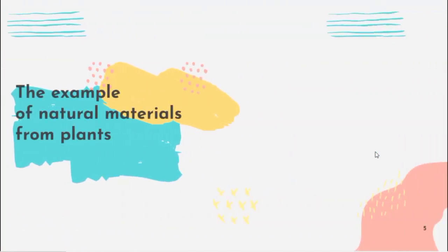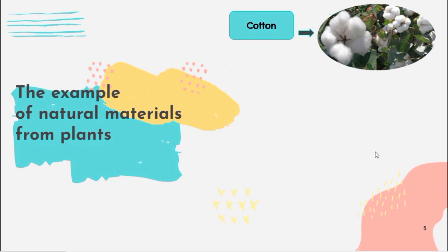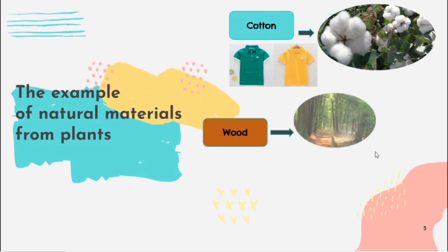Next, the example of natural materials from plants. First, cotton. We get cotton from cotton plants. We use cotton to make t-shirts. Next, wood. We can get wood from trees.